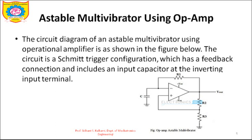The circuit diagram of the astable multivibrator using op-amp is shown in the figure below. The circuit is a Schmitt trigger configuration which has a feedback connection and includes an input capacitor at the inverting input terminal. The key difference to observe is that feedback is given to the positive input of the op-amp. Whenever feedback is given to the positive terminal, the circuit is astable — it does not have any stable state. With negative feedback, it would give a stable state.